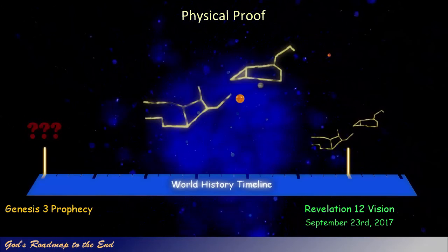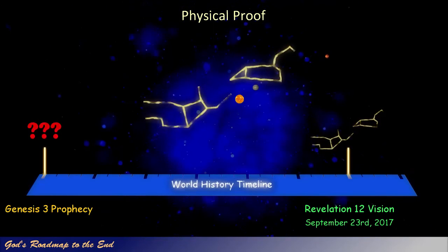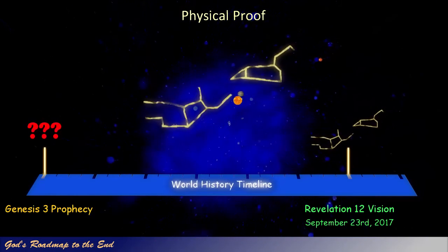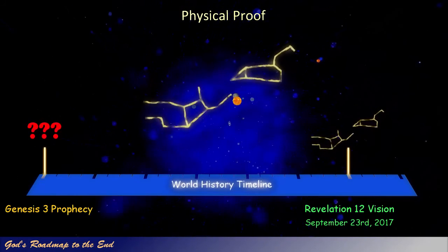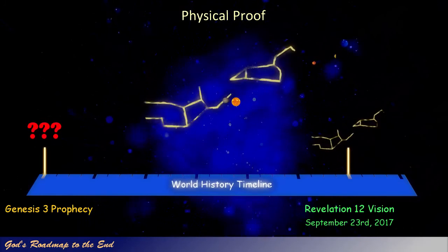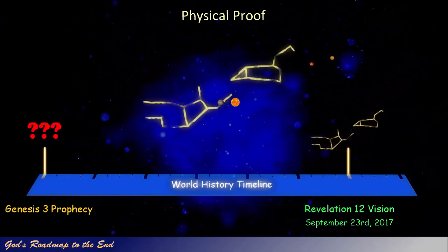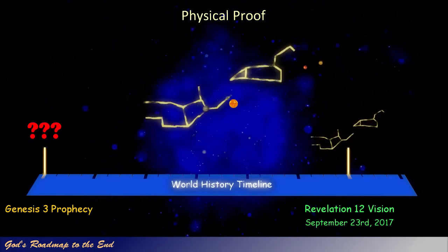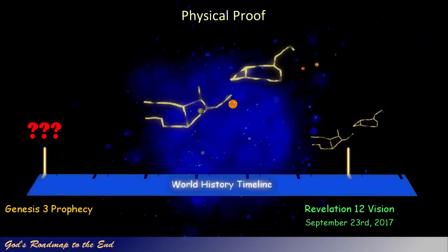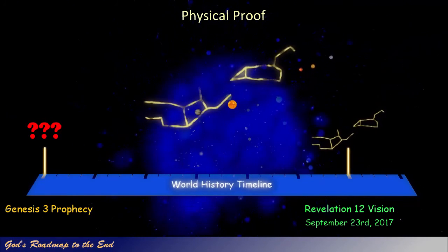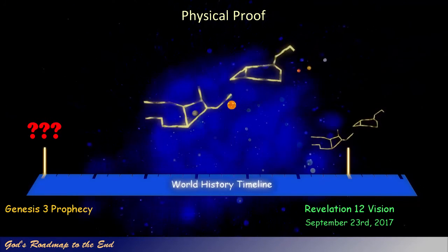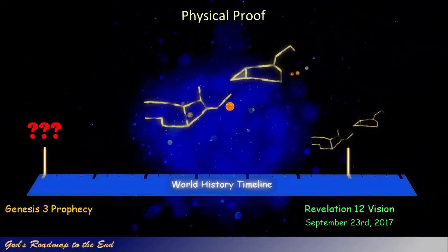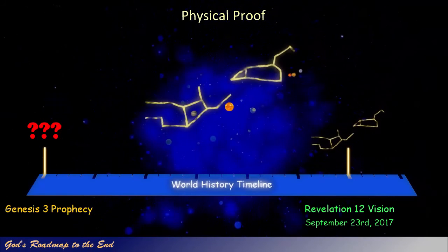The celestial representation and progression of stars and planets that are associated with the Revelation 12 sign are very complex and unique, and require a number of events in the heavens to succeed each other perfectly in order to arrive at the result as described in Revelation 12.